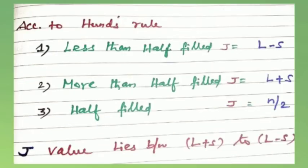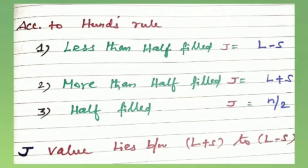According to Hund's rule, there are three formulas. First, if the sub-shell is less than half-filled, the smallest J value — that is L minus S — is more stable. Second, if the sub-shell is more than half-filled, the largest J value — that is L plus S — is more stable.